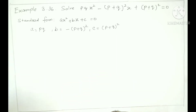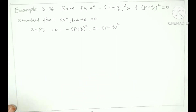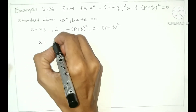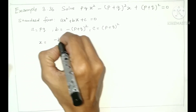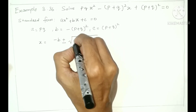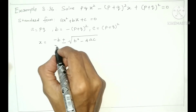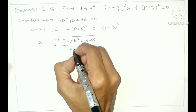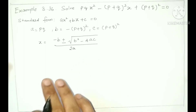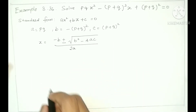So we have A, B, C. How do we solve this? By the formula method. In the formula method, we apply the formula and substitute A, B, and C into it.